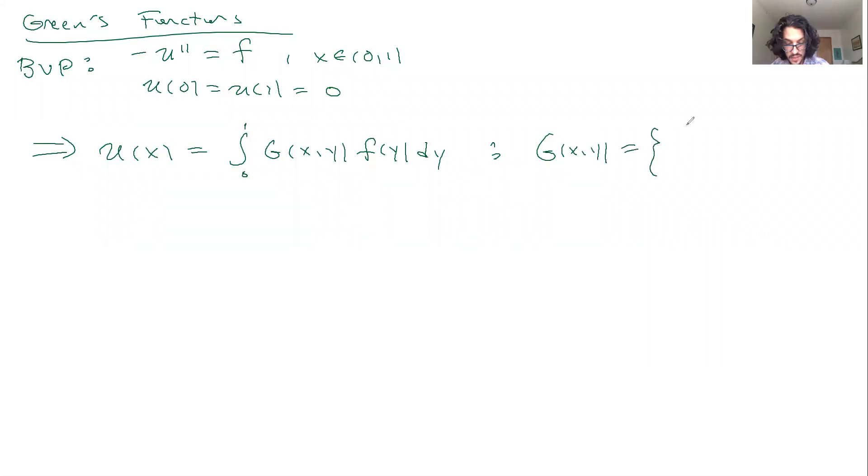where the Green's function here is piecewise C2. So y(1-x) when y is less than or equal to x, and x(1-y) when y lives between x and 1.